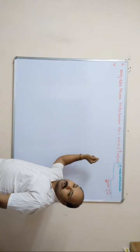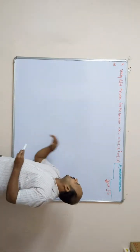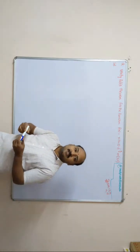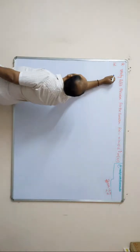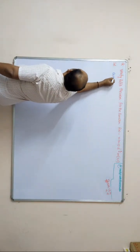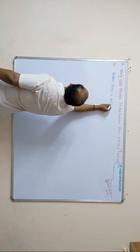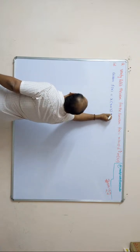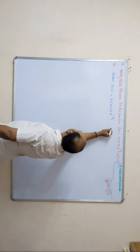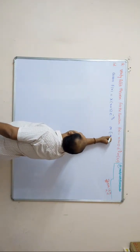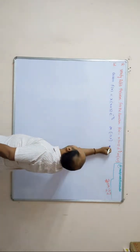We will now discuss the question: Verify Rolle's theorem for the function f(x) = x(x+3)e^(−x/2) on the closed interval [−3, 0]. First, write the given function: f(x) = x(x+3)e^(−x/2) on the closed interval [−3, 0].